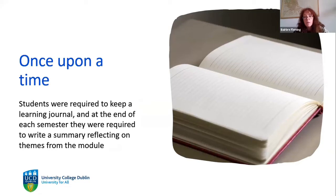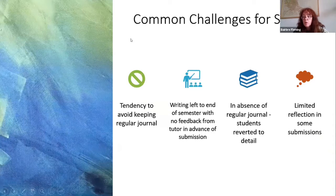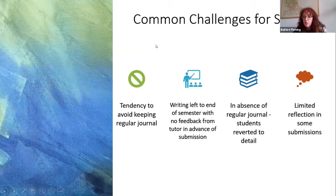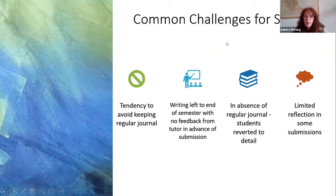The access course, the oldest running access program in Ireland with over 20 years of history, originally had only one assessment: two long learning journals with a summary at the end of each semester. Challenges included students avoiding regular journaling, leaving everything to the last minute, receiving no feedback during the semester, and producing descriptive rather than critical entries — the journals read like a captain's log: 'week one we covered this, week two we did that.'